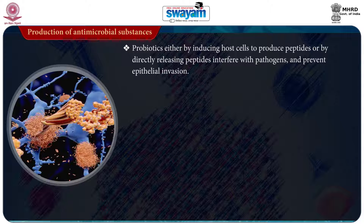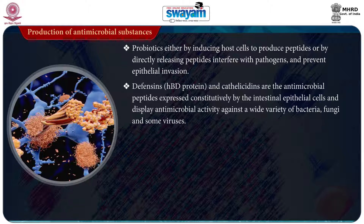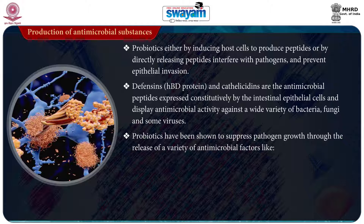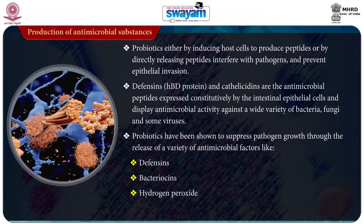The second mechanism of action is production of antimicrobial substances. Probiotics, either by inducing host cells to produce peptides or by directly releasing peptides, interfere with pathogens and prevent epithelial invasion. Antimicrobial substances like defensins are antimicrobial peptides expressed constitutively by intestinal epithelial cells and display antimicrobial activity against a variety of bacteria, fungi, and some viruses. Probiotics have been shown to suppress pathogen growth through the release of antimicrobial factors like defensins, bacteriocins, hydrogen peroxide, nitric oxide, as well as short-chain fatty acids such as lactic acid and acetic acid.